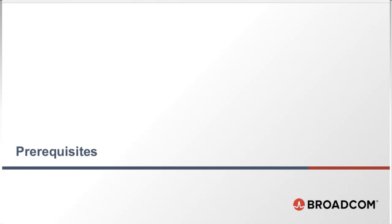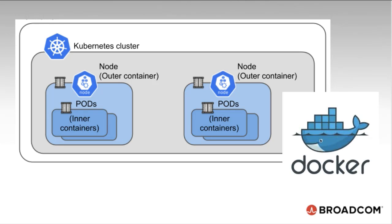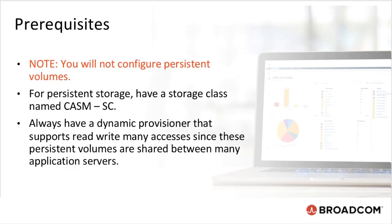Before we start the deployment process, we will need to consider and plan for the following prerequisites. We must have a Kubernetes cluster with one master node and at least two worker nodes. If the worker nodes are not big enough, we can go with one, but it is better to have more than one, as there is always a risk of a VM or host worker node going down. We will need to ensure that both the master and worker nodes have Docker. For persistent storage, we will need to have a storage class named 'chasm,' and always have a dynamic provisioner that supports read-write capabilities, since these persistent volumes are shared between many application servers.